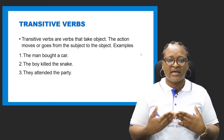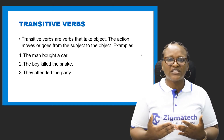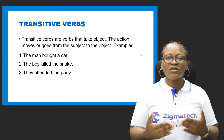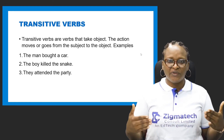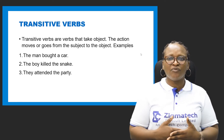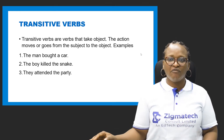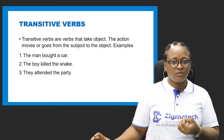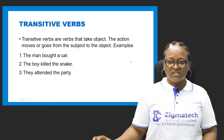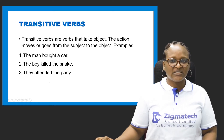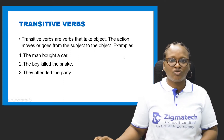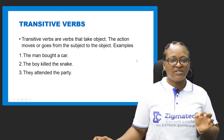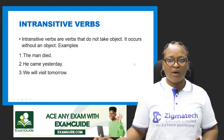For example: 'The man bought a car.' Something was bought — a car — which is a thing. Your object can either be a person or a thing. Once you have an object, the verb immediately before it is transitive. Other examples: 'The boy killed the snake' — 'killed' is transitive. 'He attended the party' — 'attended' is transitive because there is an object after it, which is 'the party.'